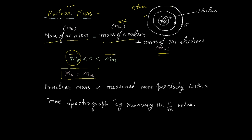As a result, the mass of the atom is equal to the mass of the nucleus. Nuclear mass is measured more precisely with a mass spectrograph by measuring its e/m value.